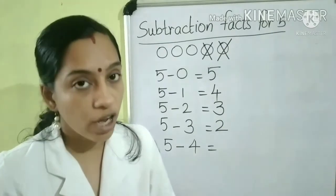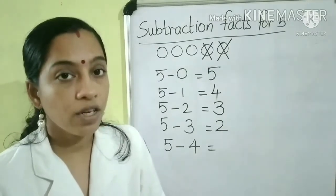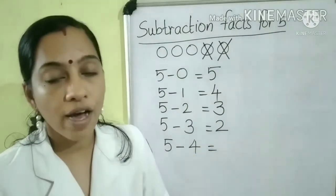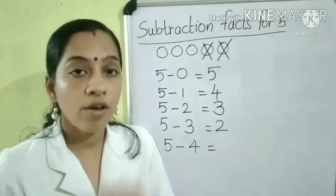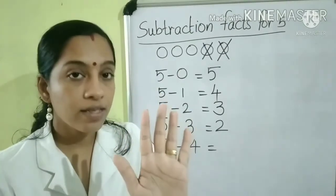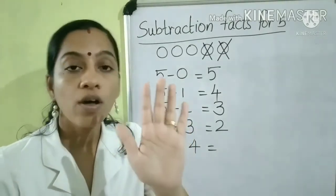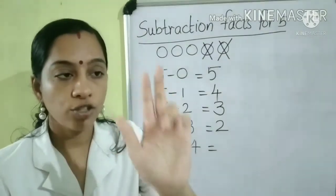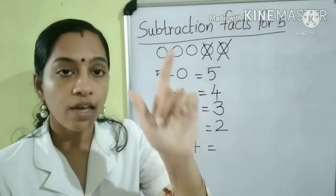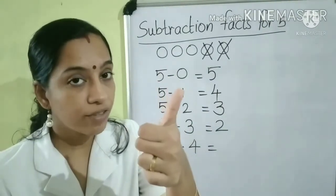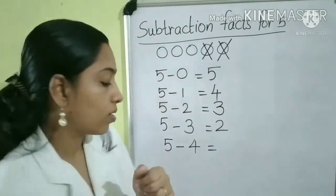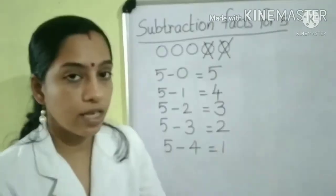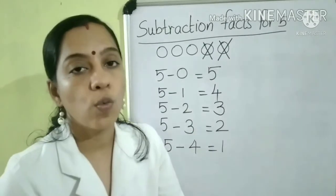Next, we are going to subtract 4 from 5. So, take 5 fingers and fold 4 fingers — 1, 2, 3, 4. How many fingers are left? 1. So, 5 minus 4 is equal to 1.